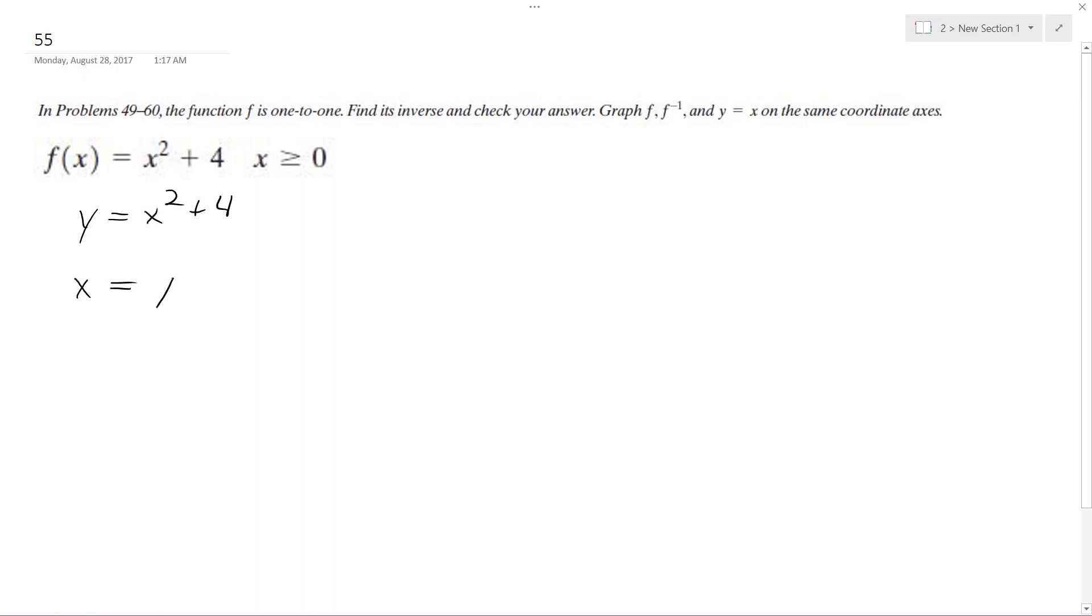So x is equal to y squared plus 4. We're going to solve for y again. So y squared is equal to x minus 4. Take square root, we get square root of x minus 4.